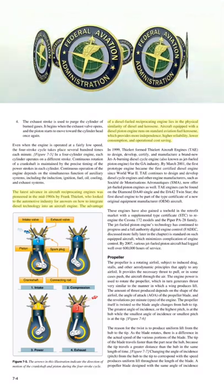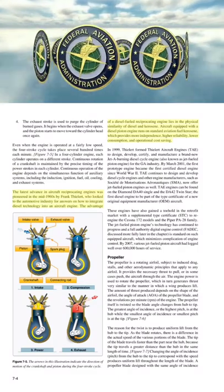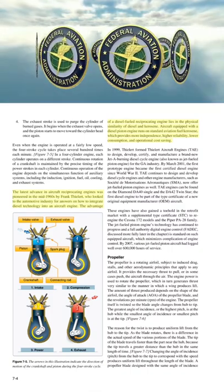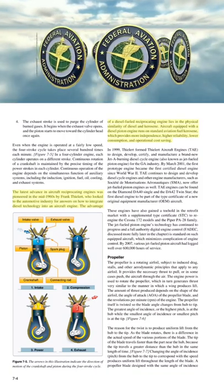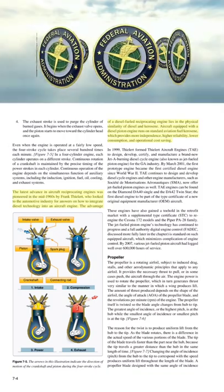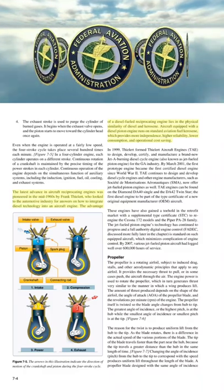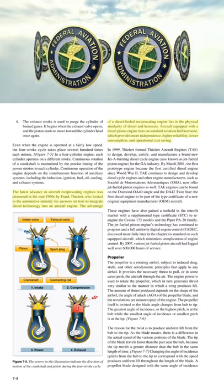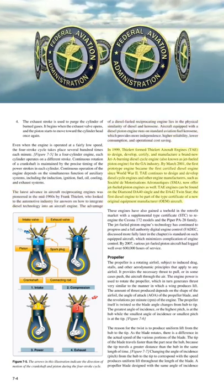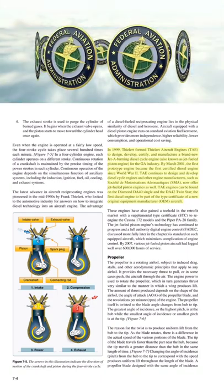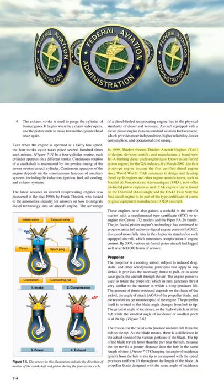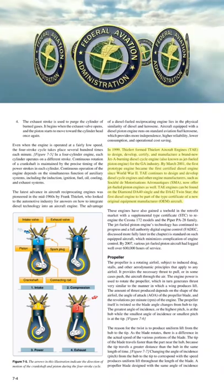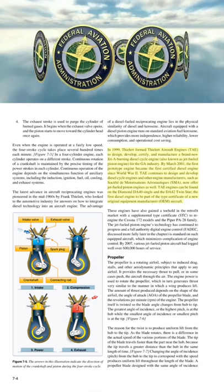The latest advance in aircraft reciprocating engines was pioneered in the mid-1960s by Frank Thielert, who looked to the automotive industry to integrate diesel technology into an aircraft engine. The advantage of a diesel-fueled reciprocating engine lies in the physical similarity of diesel and kerosene. Aircraft equipped with a diesel-piston engine run on standard aviation fuel kerosene, which provides more independence, higher reliability, lower consumption, and operational cost savings. In 1999, Thielert formed Thielert Aircraft Engines, and by March 2001, the first prototype became the first certified diesel engine since World War II.